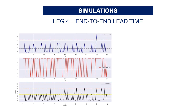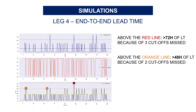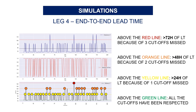With only the last leg remaining, we can look at the end-to-end lead time. Only one scenario is above the red line — meaning more than 72 hours of lead time due to three cutoff times missed. We have just under 10 scenarios close to 48 hours of delay, which represents two cutoff times missed. The majority of scenarios are around the yellow line, meaning more than 24 hours of delay or one cutoff time missed. The rest, near the green line, had all cutoff times respected but with lead time oscillating around the target.